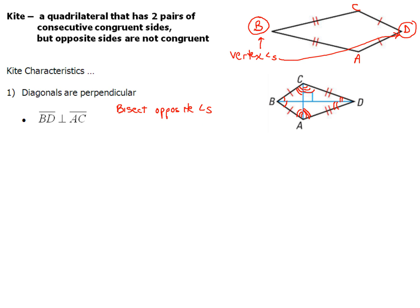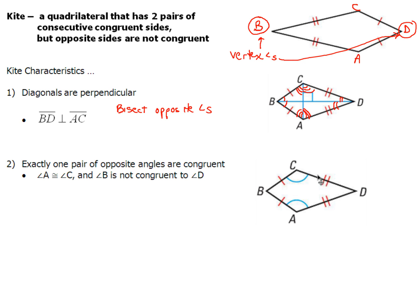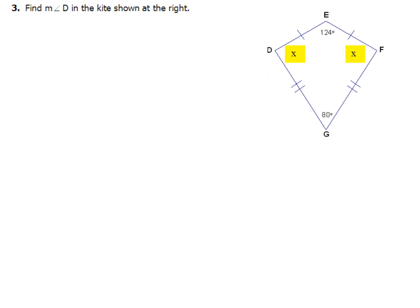So that's two things that the diagonals do. One they're perpendicular and two they bisect opposite angles. Now with that, exactly one pair of opposite angles are congruent and they're going to be the non-vertex angles. B and D are your vertex angles and A and C are your non-vertex angles and they're the ones that are congruent. Now a lot of times you'll be given a problem like this. It says, find the measure of angle D in the kite shown at the right.